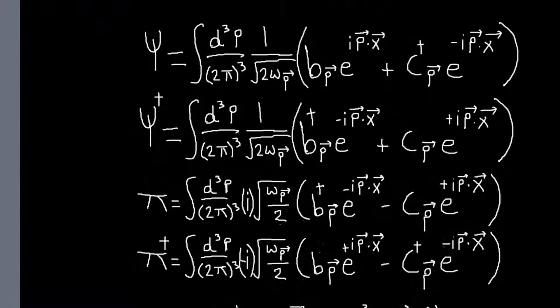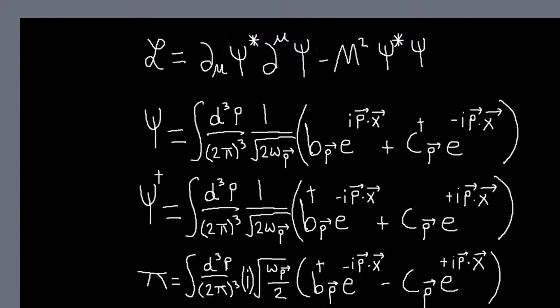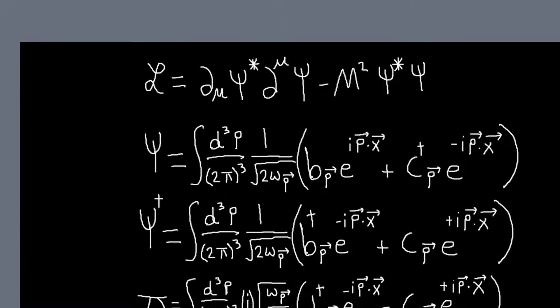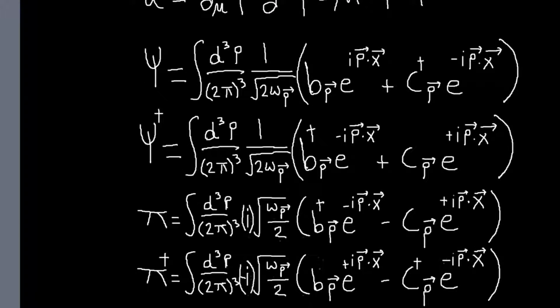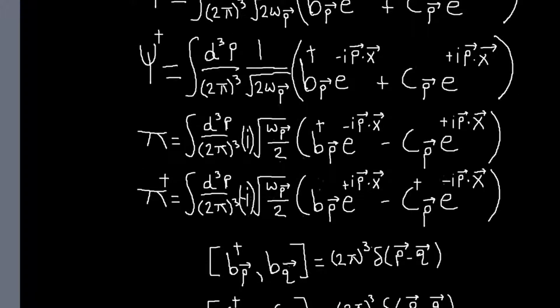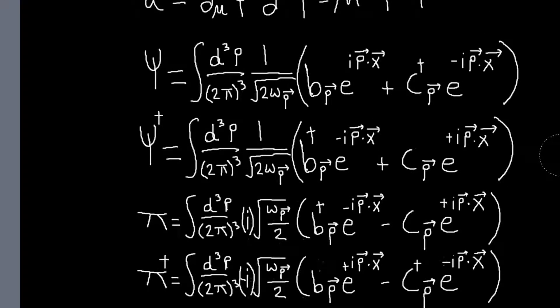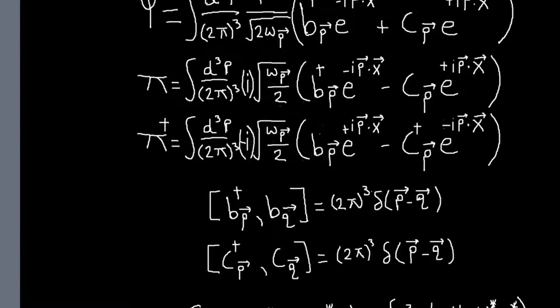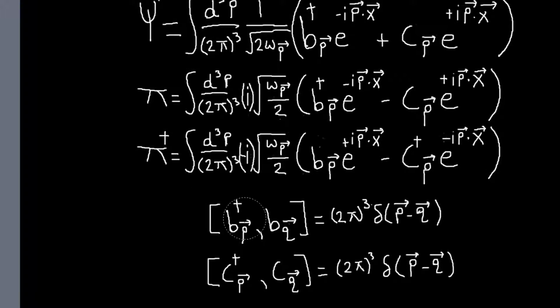And then basically, so from the Lagrangian, we could compute the Hamiltonian. And then once we have our Hamiltonian in terms of the conjugate momentum and fields, we could just plug in these things and then use our—so each of our creation and annihilation operators will satisfy the same, the usual commutation relations. There's just two of them now. It's the only difference.